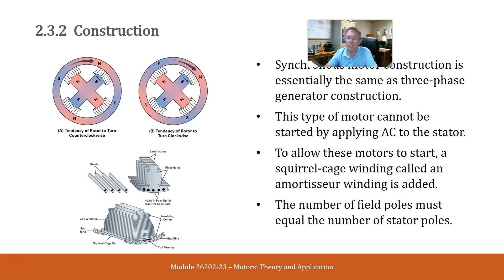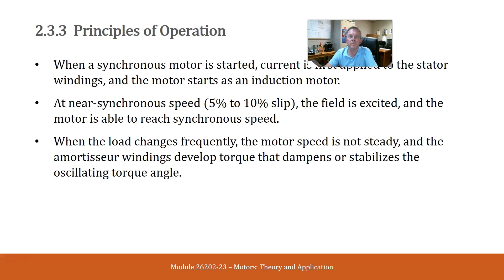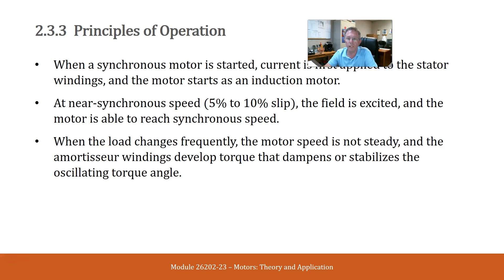The number of field poles must equal the number of stator poles. When a synchronous motor is started, current is first applied to the stator winding and the motor starts as an induction motor. At near synchronous speed — 5 to 10% slip — the field is excited and the motor is able to reach synchronous speed. When the load changes frequently, the motor speed is not steady and the amortisseur winding develops torque that dampens or stabilizes the oscillating torque angle.